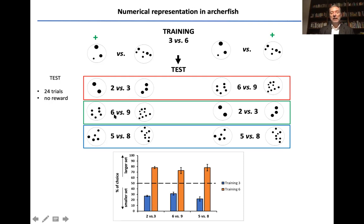Or six versus nine. Note that in this case six that was the negative is positive in this case, or a completely different pair, five versus eight. And the same is true for the different, for the parallel condition in which archerfish were trained with the six as positive. And you can see that they choose very very clearly on the basis of the relative numerosity.